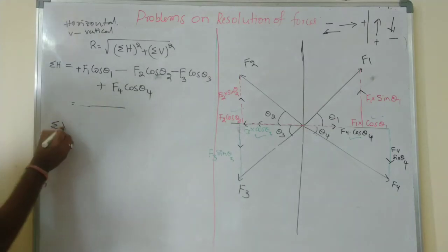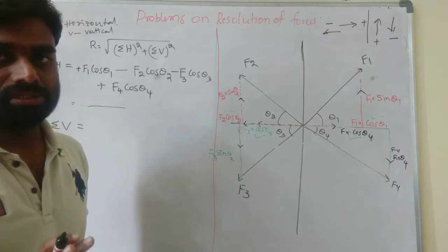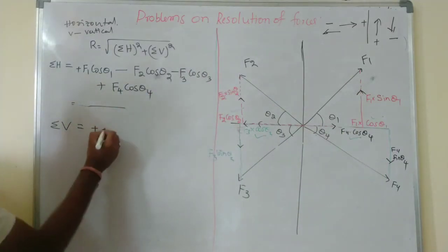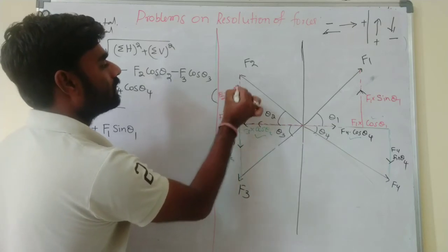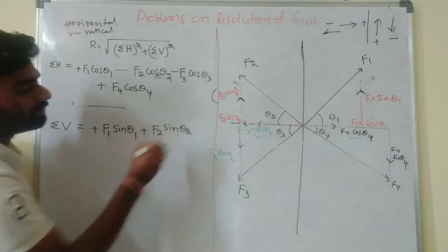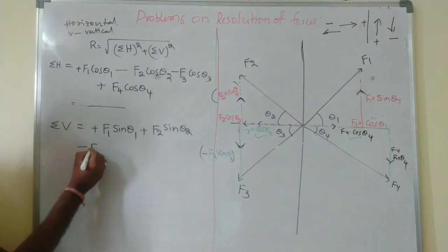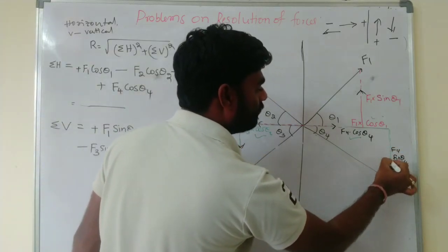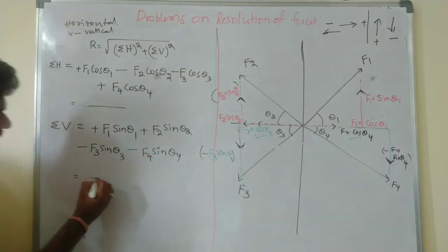Now calculating Sigma V — the sum of all vertical forces. F1·sin(theta1) is acting upward, so it is positive. F2·sin(theta2) is also acting upward, so take plus F2·sin(theta2). F3·sin(theta3) is acting downward, so take minus F3·sin(theta3). F4·sin(theta4) is also acting downward, so take minus F4·sin(theta4). This is the complete procedure for Sigma V.